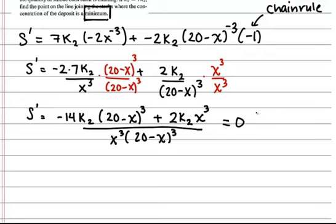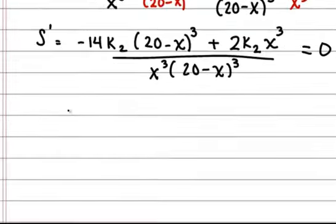Now, we're going to set this equal to 0 in order to optimize it. And this is going to be true when the numerator is equal to 0. If the denominator is equal to 0, then our value for our slope would be undefined. And so we want to set it at 0. So let's go ahead and set the numerator equal to 0.